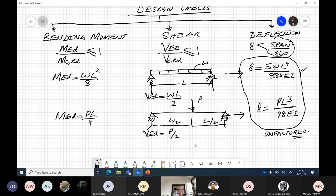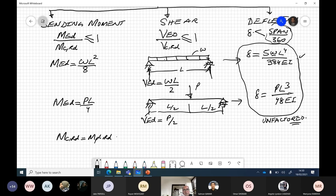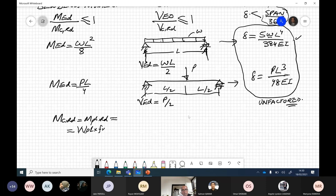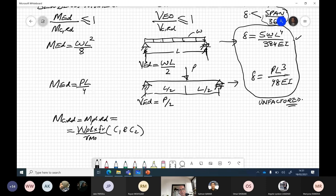Now how do we find out the M_C,RD? M_C,RD is equal to M_PL,RD for class 1 and 2 sections. It depends on the classification. That is equal to W_pl*f_y over gamma_M0. This is for C1 and C2. And you already know that for class 3 it will be W_elastic. For class 4 it would be effective from section classification.